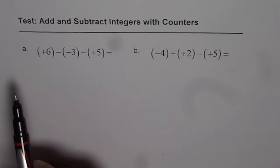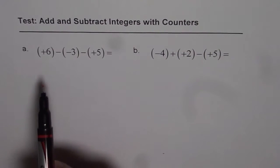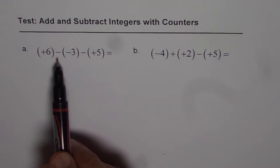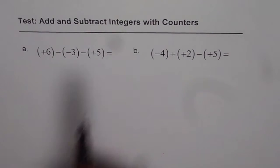The question is, add and subtract integers with counters. There are two parts to this question. The first one is (+6) - (-3) - (+5) equals to what?